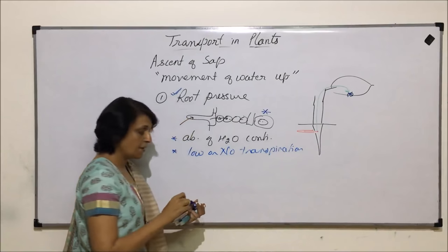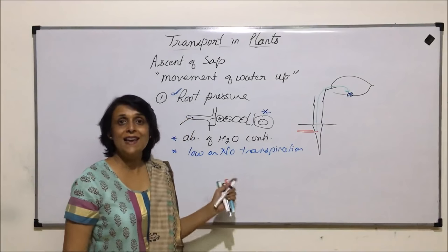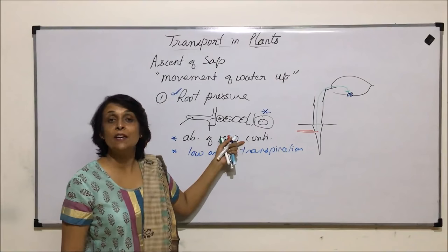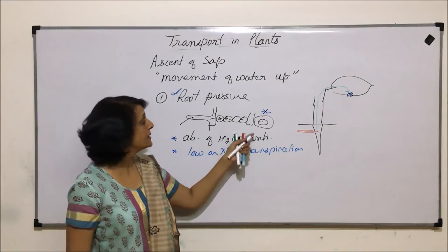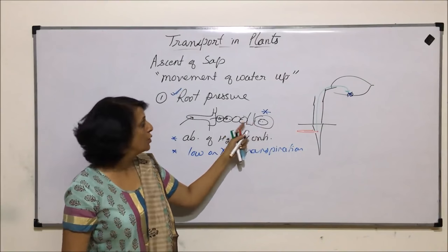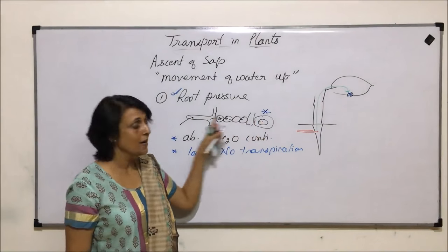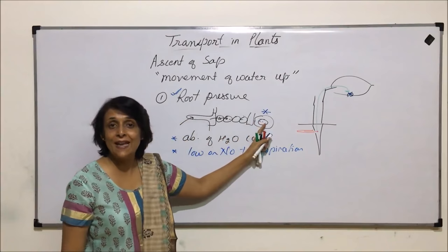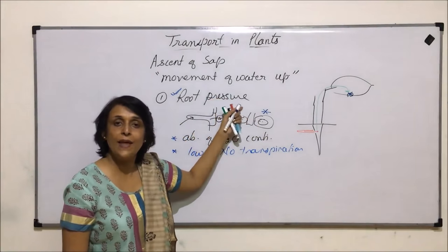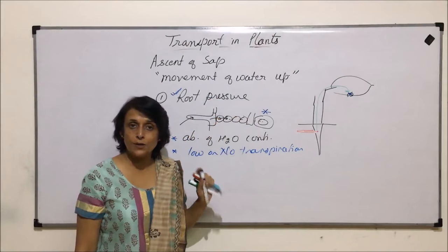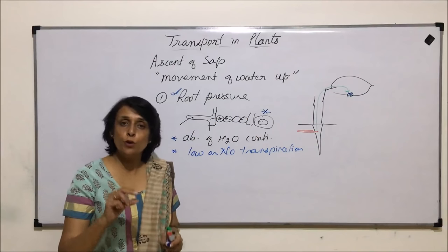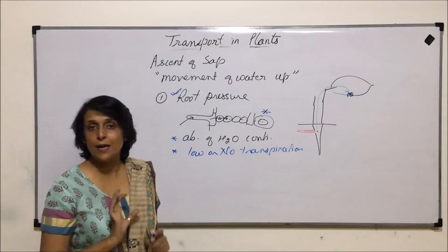If transpiration is negligible or totally stopped and continuous inward movement of water takes place, this results in generation of a pressure due to accumulation of water passively moving in. That pressure is known as root pressure. However, this pressure is enough to push water only by a few centimeters.